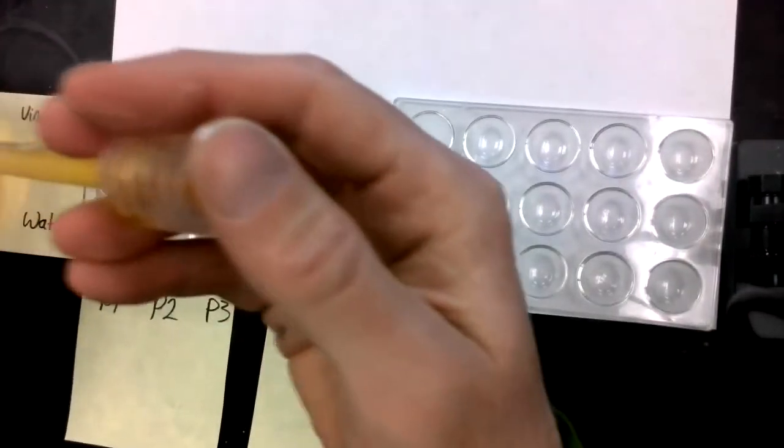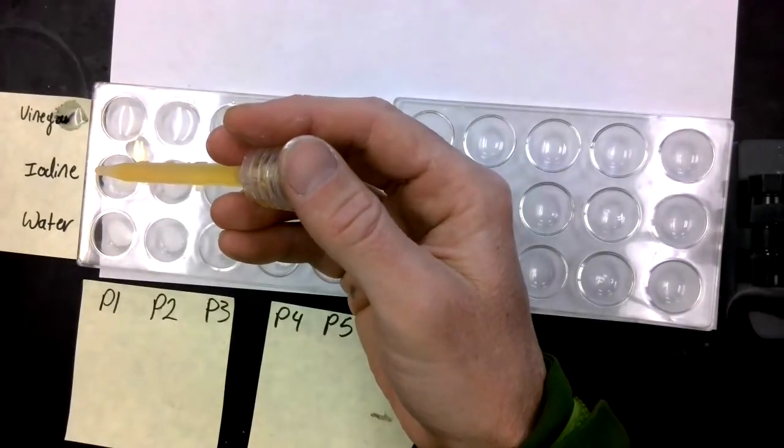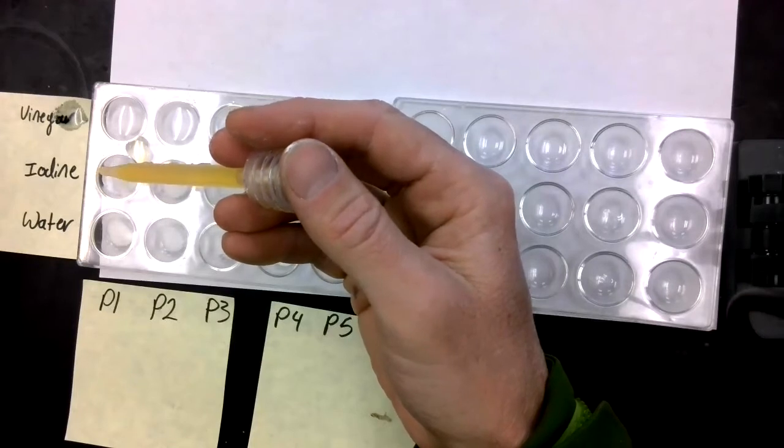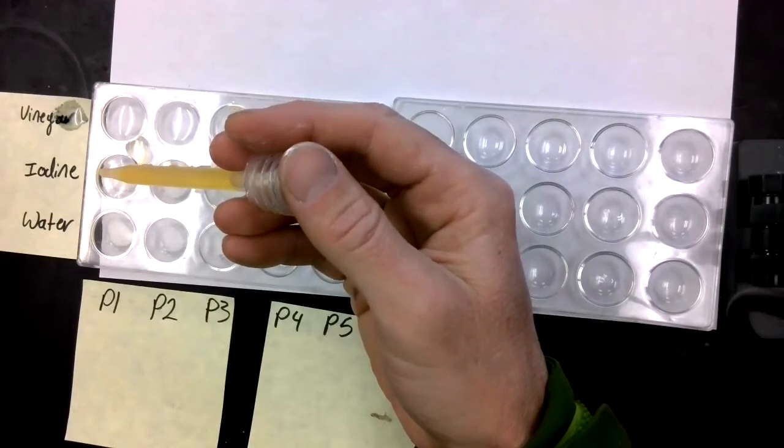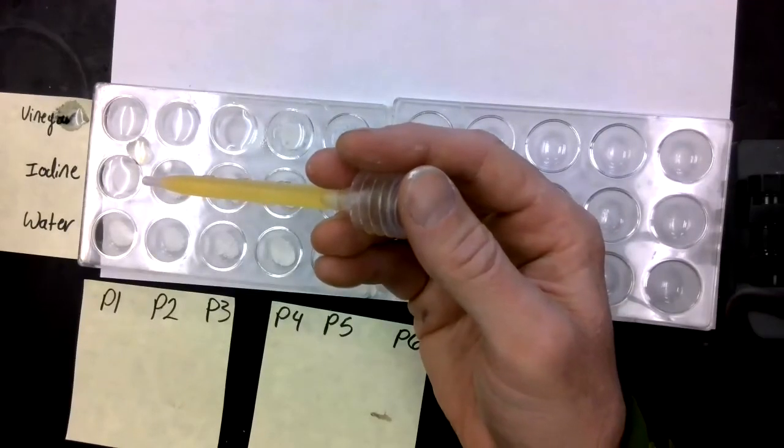All right, iodine and substance one. So what color is the liquid in tray one, in powder one? Clear.